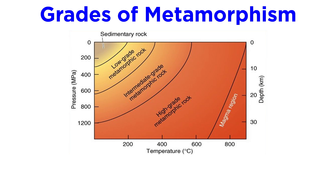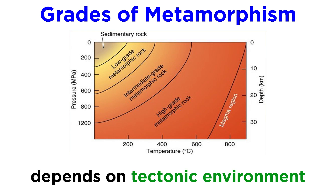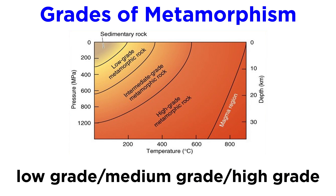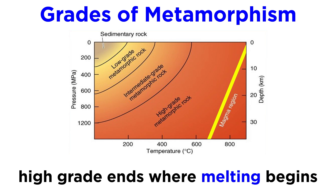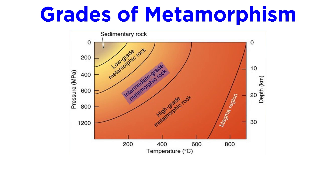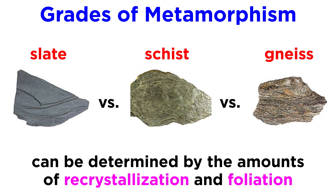However, when geologists talk about metamorphism, they are referring to rocks that recrystallize at temperatures greater than 200 degrees Celsius, far above the realm of diagenesis. Metamorphism is classified based on both its intensity and its pressure with respect to temperature, which corresponds to the tectonic environment where metamorphism took place. Metamorphic intensity can be classified as either low-grade, medium-grade, or high-grade, with low-grade describing conditions above the realm of diagenesis, high-grade encompassing conditions up until melting begins, and medium-grade being in between. When examining a metamorphic rock, its metamorphic grade can be determined by the amounts of recrystallization and foliation.